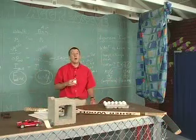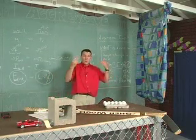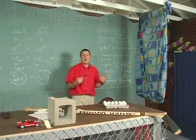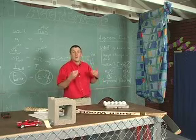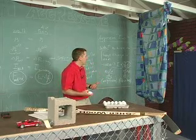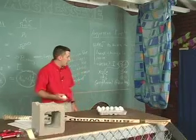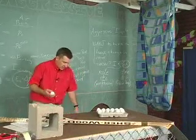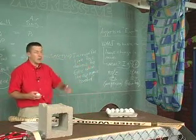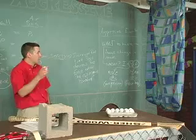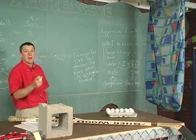Let's look at one more demonstration here, and this one gives us a lot more information about the varying force. In this case, I have a sheet hanging from the wall. I'm going to stand as far back from the sheet as I was from the wall when I tossed that egg. I'm going to chuck it at the same speed and let's see what happens. Here's our egg.